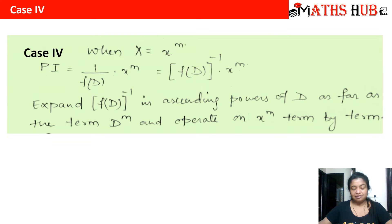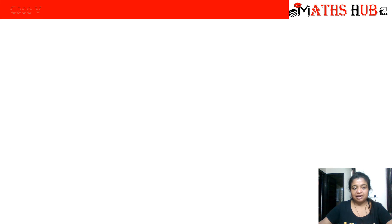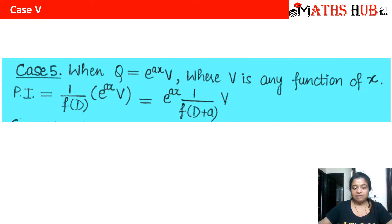Rule 4 says that whenever we have powers of x, we take f(d) in the numerator and expand it in descending orders of d, retaining only those terms up to d to the power of the exponent m. Whenever the order of the derivative exceeds the exponent, the derivatives all become zero. Rule 5 applies whenever we have a product function where one of the functions is exponential — the exponential comes out, we replace d with d plus a, and then this operator works on the remaining function v.